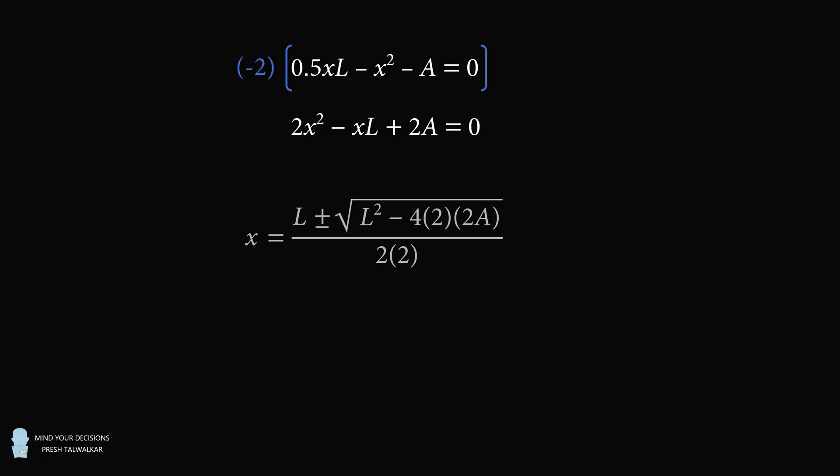We then use the quadratic formula to get X is equal to L plus or minus the square root of the quantity L squared minus 4 multiplied by 2 multiplied by 2A. And this is all over 2 multiplied by 2. This simplifies to be L plus or minus the square root of the quantity L squared minus 16A all over 4.